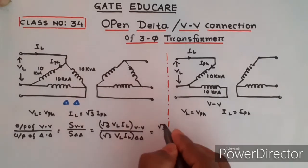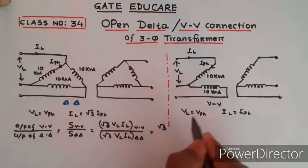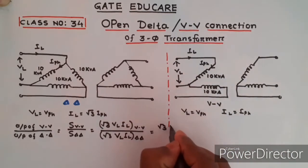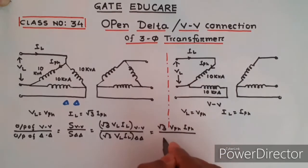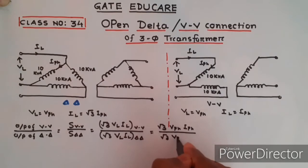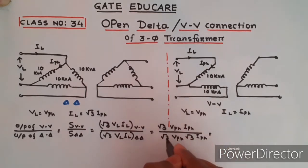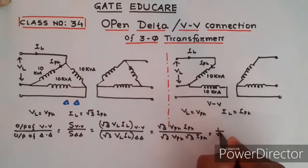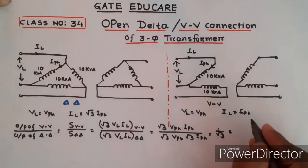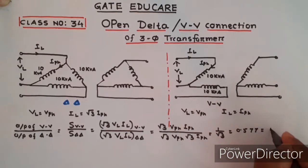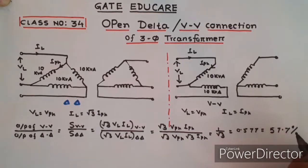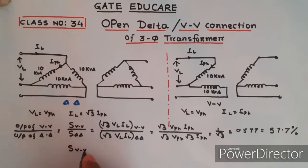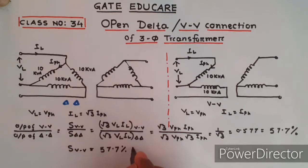In the V-V connection, VL equals V-phase and IL equals I-phase, so the numerator becomes V-phase times I-phase. In the delta-delta connection, VL equals V-phase and IL equals root 3 times I-phase. The root 3 terms cancel, V-phase cancels, and I-phase cancels, giving 1 over root 3, which equals 0.577 — that is 57.7 percent. This means the rating of the V-V connection is 57.7 percent of the delta-delta output.